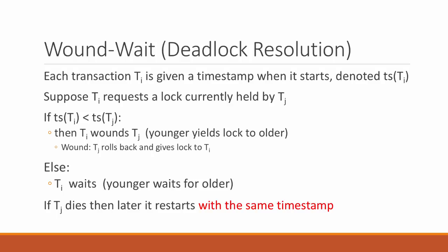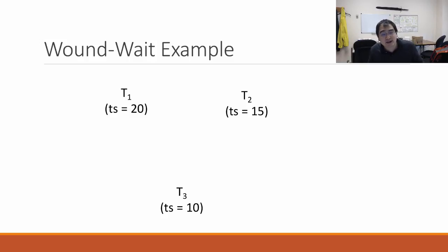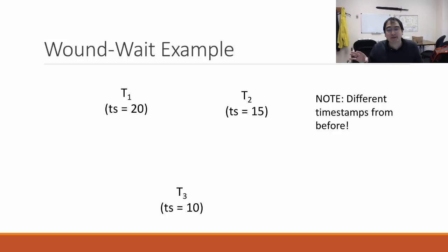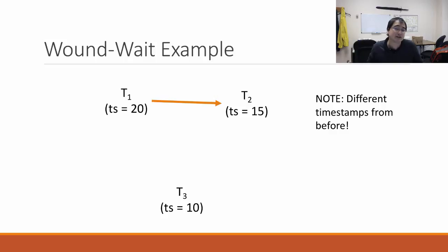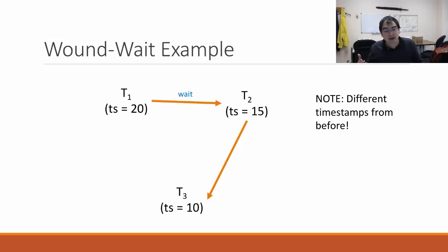Let's do a wound-wait example. Transaction 3 starts first with timestamp 10, then transaction 2, then transaction 1. Transaction 1 needs a lock held by transaction 2. Is transaction 1 younger or older than transaction 2? It's younger. In wound-wait, younger ones wait — so transaction 1 waits on transaction 2. Transaction 2 needs a lock held by transaction 3. Is transaction 2 younger than transaction 3? Yes, so transaction 2 waits.